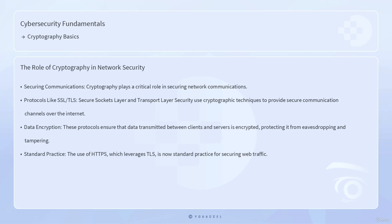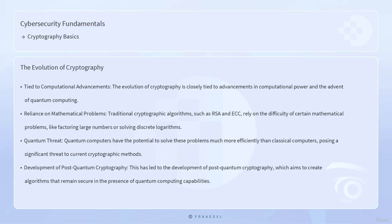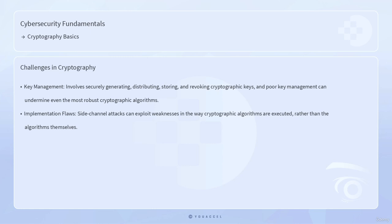The use of HTTPS, which leverages TLS, is now standard practice for securing web traffic. The evolution of cryptography is closely tied to advancements in computational power and the advent of quantum computing. Traditional cryptographic algorithms such as RSA and ECC rely on the difficulty of certain mathematical problems like factoring large numbers or solving discrete logarithms. However, quantum computers have the potential to solve these problems much more efficiently than classical computers, posing a significant threat to current cryptographic methods. This has led to the development of post-quantum cryptography, which aims to create algorithms that remain secure in the presence of quantum computing capabilities.